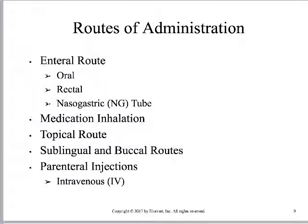Enteral routes are oral, rectal, and NG tube — anything used to access the gastrointestinal tract. What are we doing with that? Barium is the number one thing. We may be asked to administer barium either by having the patient drink it, placing it through an NG tube, or — generally we don't place barium through an NG tube but a water-soluble form of oral contrast — or we may be doing actual rectal administration through an enema tip.